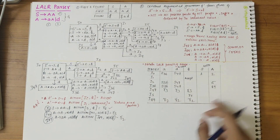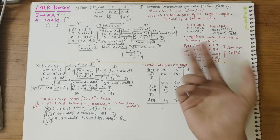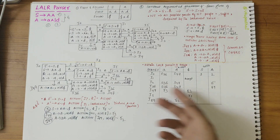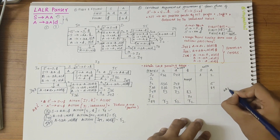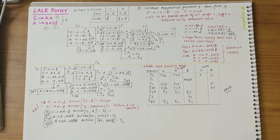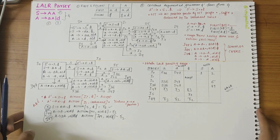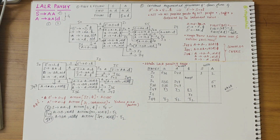If you look at the values filled in the parsing table, there are no multiple entries in any cell. So we can say that the given grammar is LALR. I hope these concepts are clear; if you have any doubts, do let me know in the comments and subscribe to my channel. Thank you.